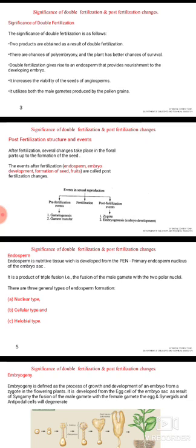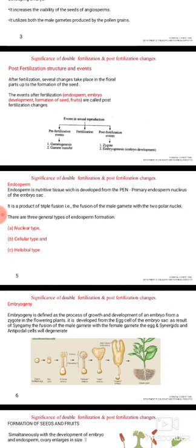Double fertilization increases the viability of seeds of angiosperms. The post-fertilization changes that occur after fertilization include several changes in the floral parts up to the formation of the seed. These events include: endosperm, which is formed by the fusion of the secondary nucleus with the male gamete; embryo, formed by fusion of the male gamete with the egg cell; and then formation of seed and fruit — these are the post-fertilization changes.